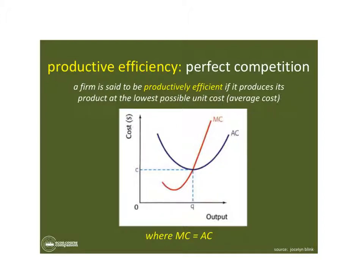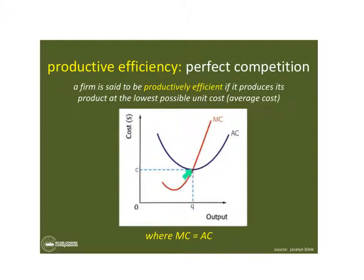We start off with a nice little definition. A firm is said to be productively efficient if it produces its product at the lowest possible unit cost, which is the average cost. So productive efficiency happens for firms — we're talking about firms, not the marketplace — when they are operating the most efficiently they possibly can in producing their goods, where MC equals their average costs. And by the way, average cost is also the average total cost. So at this quantity Q, this firm will be operating at its productively efficient point of output.